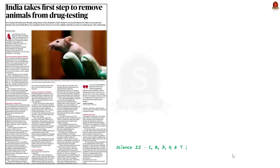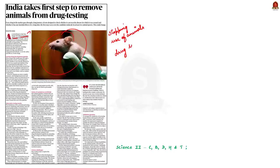The government of India recently made changes to the New Drugs and Clinical Trial Rules. The amendment is aimed at stopping the use of animals in research, mainly in drug testing. In this context, today we will discuss how drug testing is traditionally done, the issues with traditional drug testing, alternative drug testing methods, challenges with those alternatives, and how drug testing is regulated worldwide.